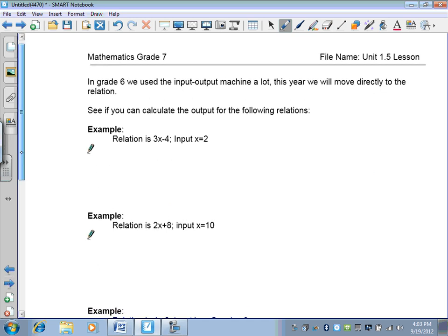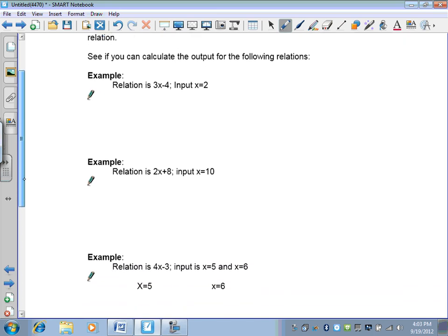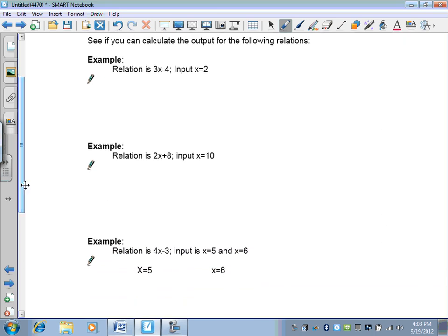We've used the grade 6 input-output machine a lot, so we're going to move directly into the relation. See if you can calculate the outputs. This is very similar to what we did when we calculated the area of a triangle or of a square or of a rectangle. Just for a quick review, if I used the formula for a triangle, area is equal to base times height divided by 2, this would be what we refer to as a formula.